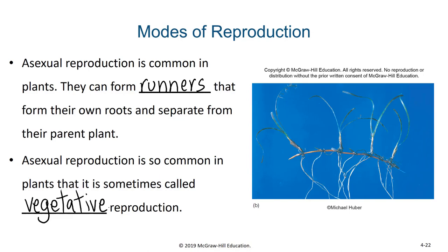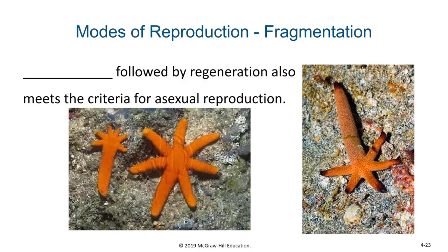Another method of asexual reproduction is fragmentation followed by regeneration. When you look at these images of these sea stars, you might wonder why that one leg or appendage grew so large. It turns out that in this case, that one leg was severed from a larger organism. Not only did that appendage end up regrowing on that organism, but the severed appendage actually regenerated the rest of a body as well. As humans, we don't have this level of regenerative ability — if someone's arm is amputated, that arm is not going to start developing a fetus on the other end, and likewise the individual who lost the arm would not be able to regrow it back. But fragmentation followed by regeneration is a form of asexual reproduction.